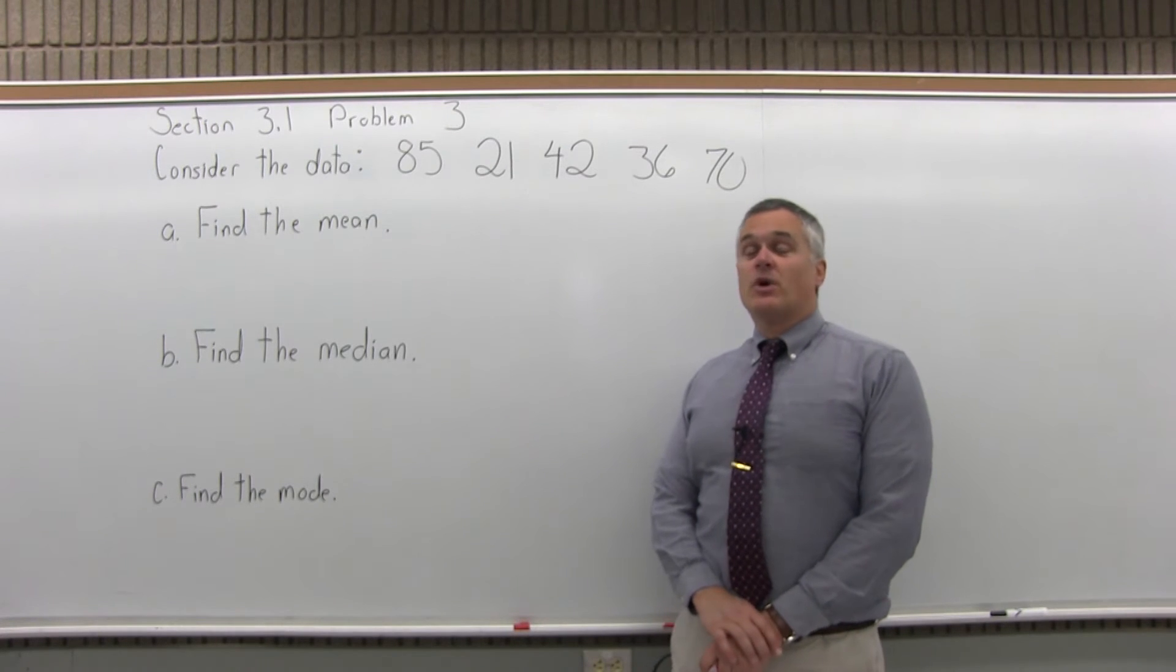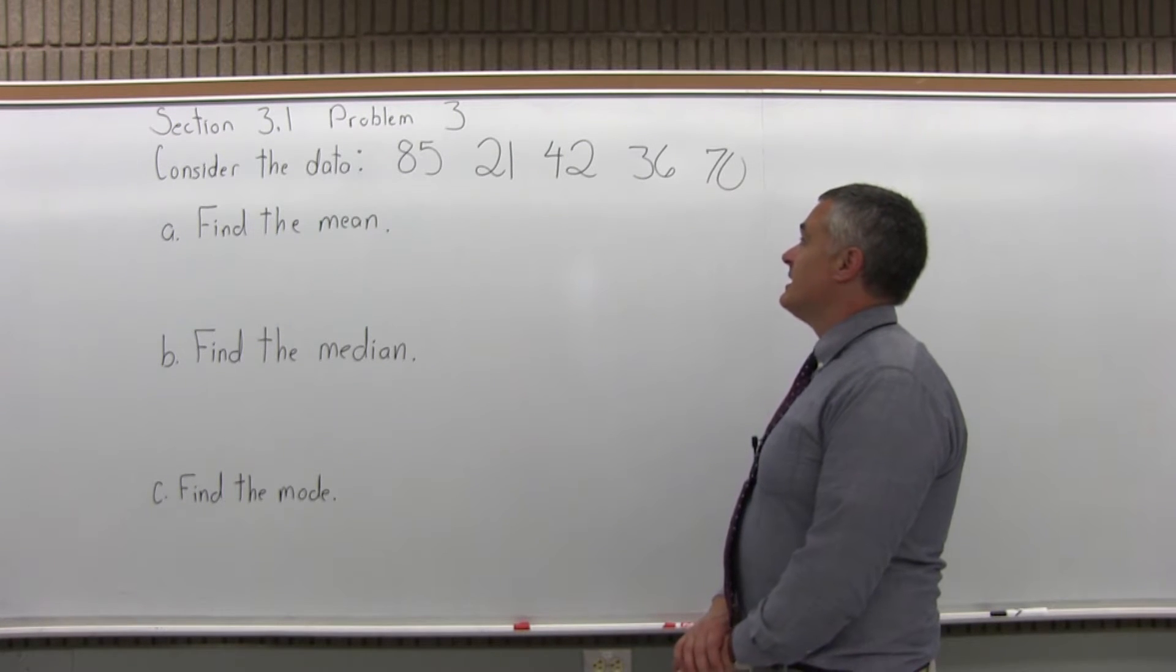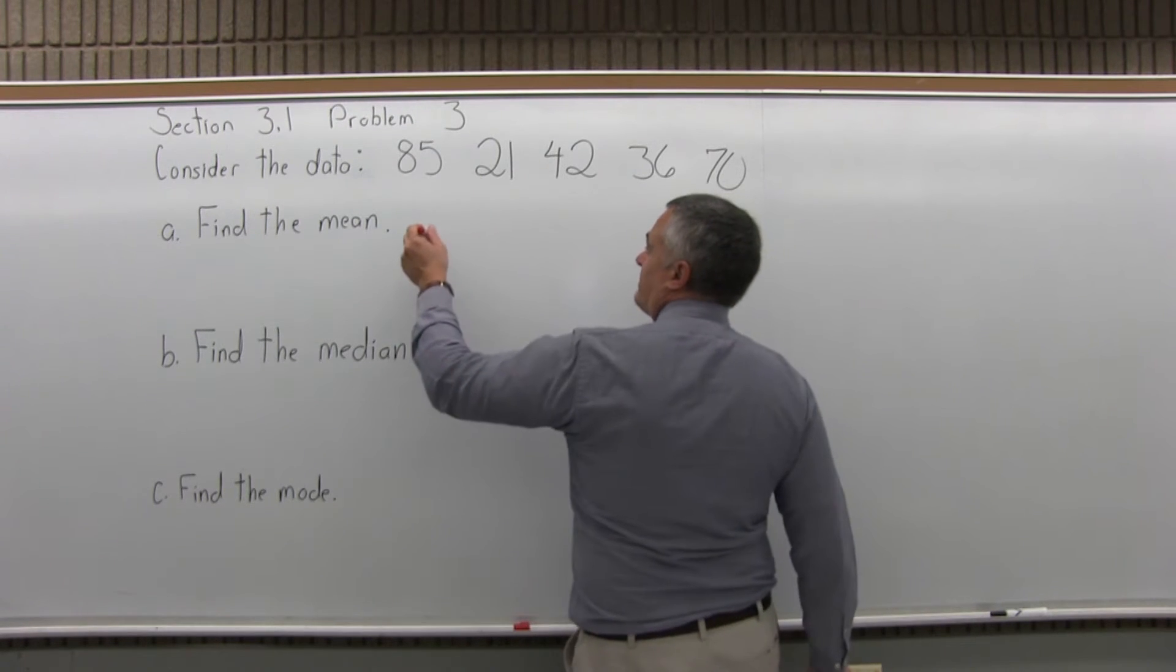This is Section 3.1, Problem 3. It says consider the data 85, 21, 42, 36, and 70. Find the mean, find the median, and find the mode.